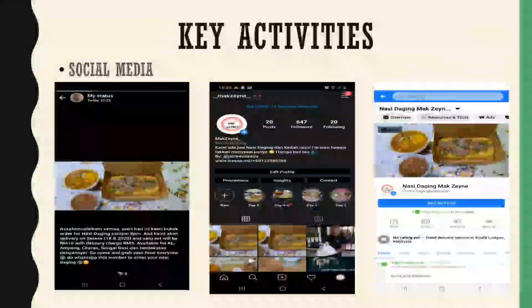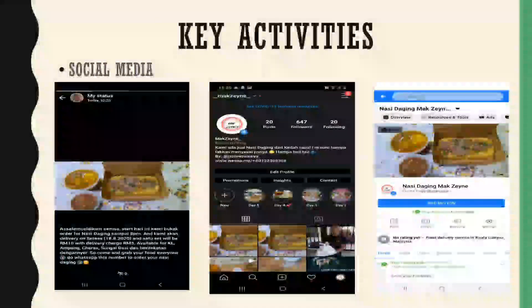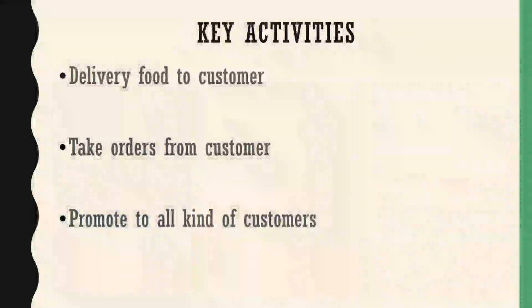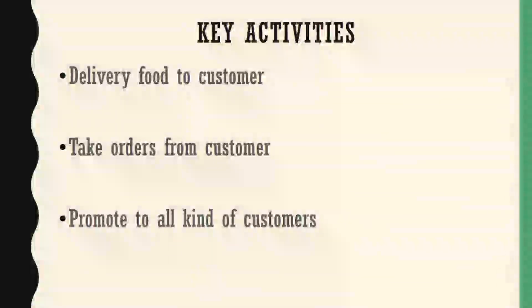For key activities, the first is social media. There are three platforms I use to promote my nasi daging: WhatsApp, where I share it in my status; Instagram, where I share through posts and stories; and Facebook on my page. The second key activity is food delivery — we will deliver our food directly to customers and promote to all kinds of customers.